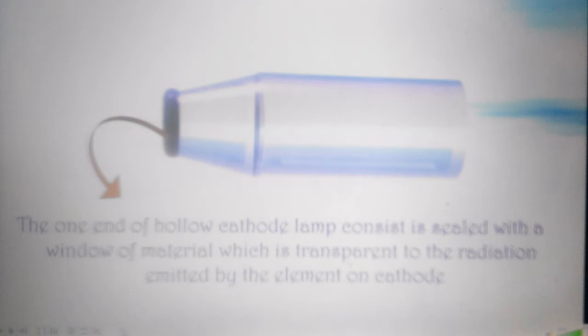At one end of the hollow cathode lamp, a transparent window is present. A transparent window is one which absorbs no radiation in the emitted light of the hollow cathode lamp. The window is usually constructed from either glass or quartz.